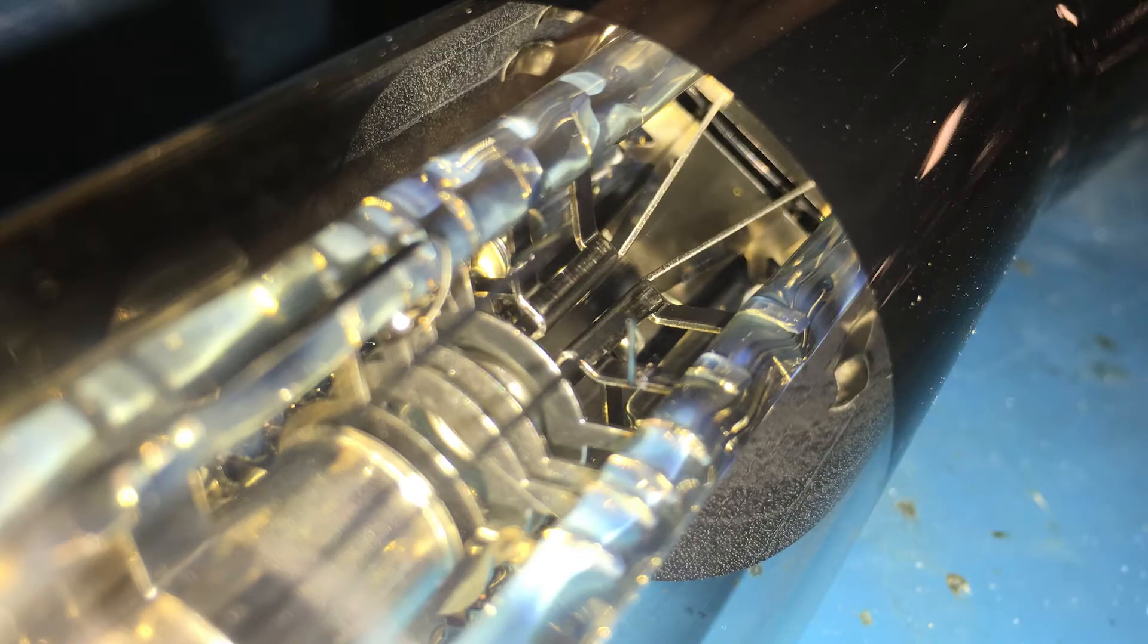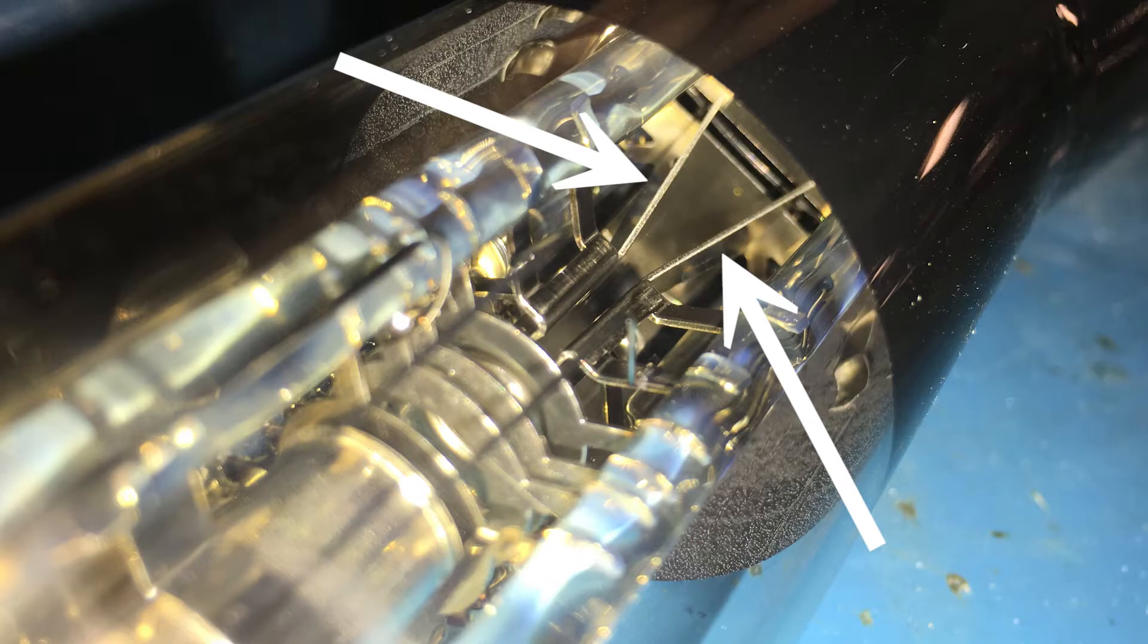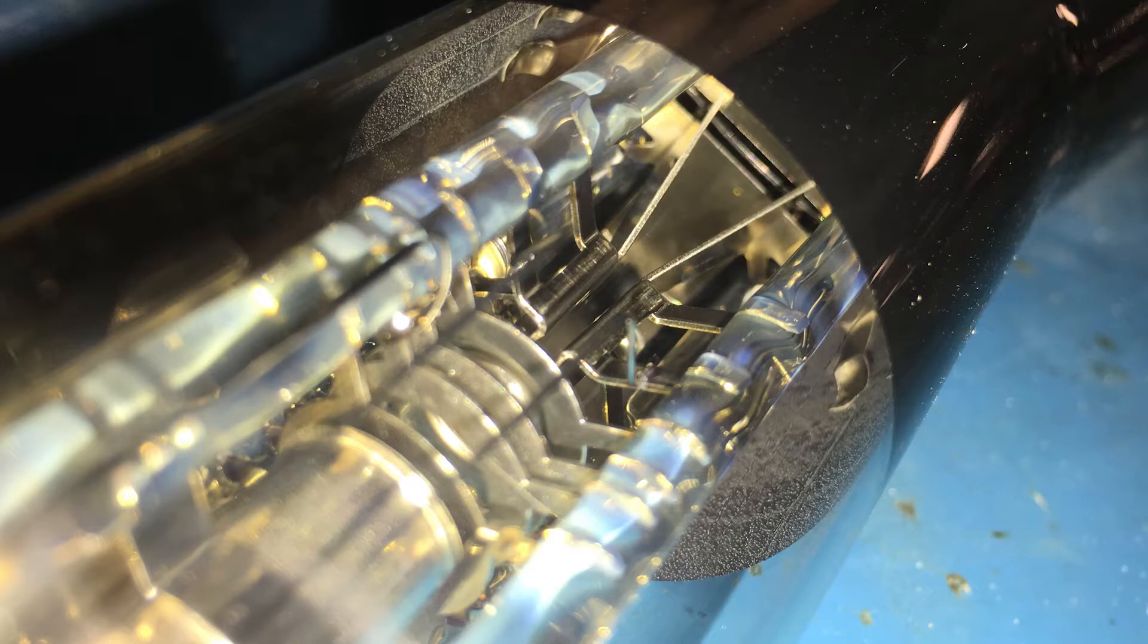Looking deeper into the cathode ray tube, we see that the beam next travels through these two angled plates. These are electrostatic deflection plates, and they are what control the beam's direction. There's actually a second pair of deflection plates deeper within the tube. The second pair of deflection plates is nearly identical to the first, except that they are 90 degrees rotated from each other.